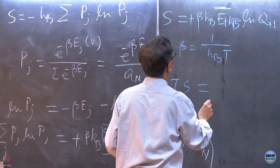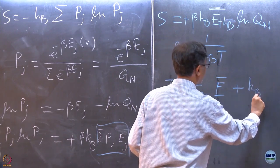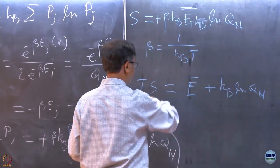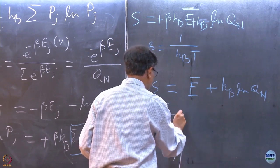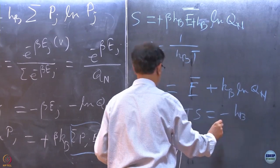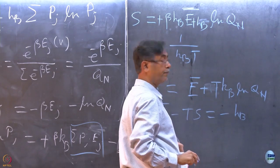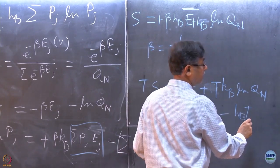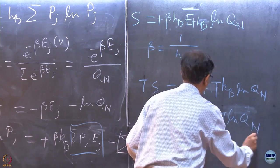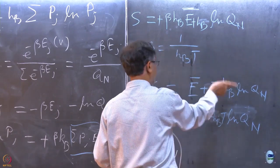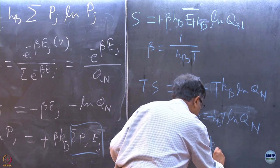So TS equals E average plus Kb ln Qn. Bringing terms to their respective sides: E minus TS equals minus Kb T ln Qn. Since E minus TS is the Helmholtz free energy A, we arrive at A equal to minus Kb T ln Qn.